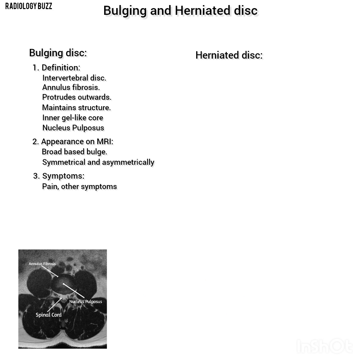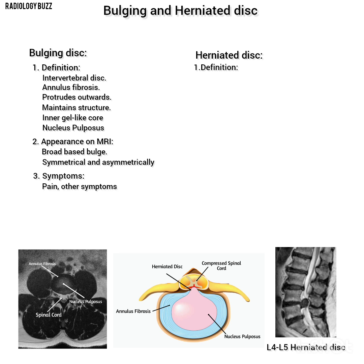Herniated disc — Definition. A herniated disc occurs when there is a tear in the annulus fibrosis, allowing part of the nucleus pulposus to escape and protrude into the spinal canal. This breach can result in a more significant displacement of disc material.